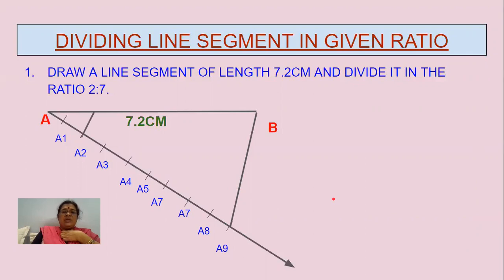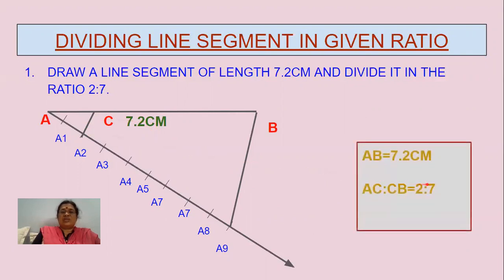What we have to do is join A9B and draw a parallel line to A9B through A2. This parallel line divides the line segment AB in the ratio of 2 is to 7. The length AB is 7.2 centimeters and it is divided in the ratio of 2 is to 7.